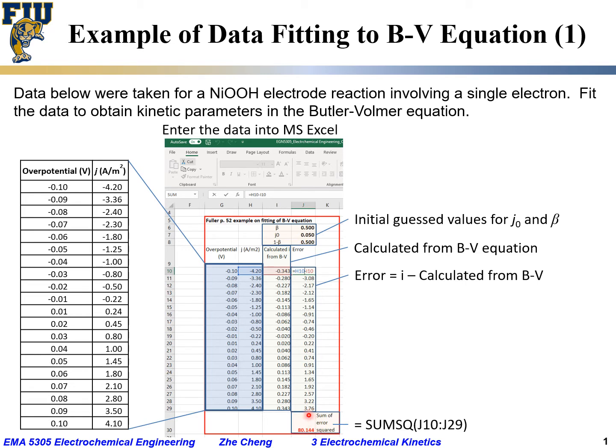With Excel, we can calculate cell J30, which is the so-called sum of error squared. In Excel, there's a function called SUMSQ, which means sum of error squared. Essentially, it does the square for each of the cells from J10 to J29, does the square and then does the summation. The result in this case would be 80.144. We have some initial guess value, we calculated the current density, we calculated the error, and then we calculate the sum of error squared to be this number, 80, which is a high number.